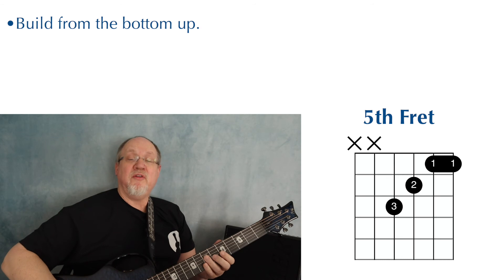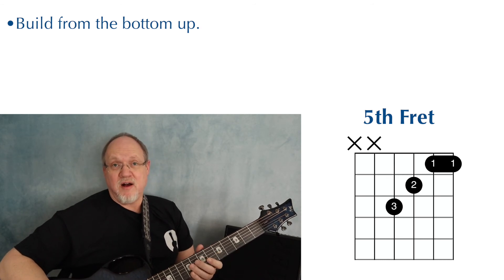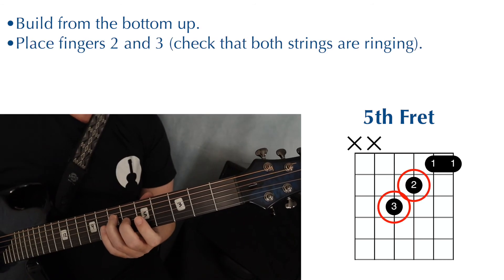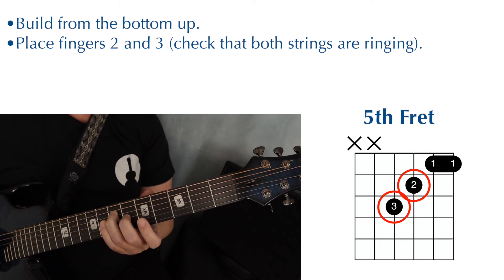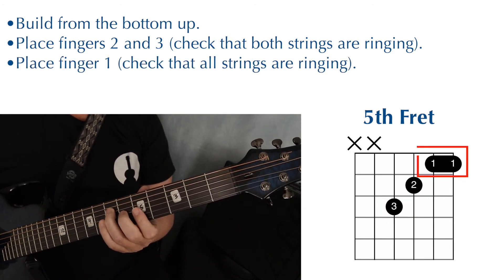You can also try building the F chord from the bottom up. Put fingers two and three down. Make sure those two strings are ringing clearly. And then add finger one.